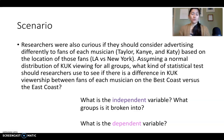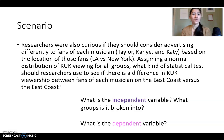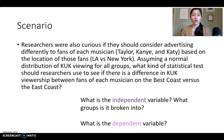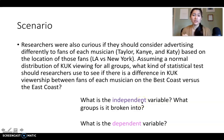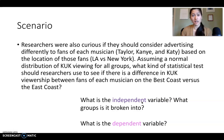So in this scenario, it says researchers were curious if they should consider advertising directly to fans of each musician — Taylor, Kanye, and Katie — based on the location of those fans, LA versus New York, assuming a normal distribution of 'Keeping Up with the Kardashians' viewing for all groups. What kind of statistical test should researchers use to see if there's a difference in viewership between fans of each musician on the West versus East coasts? When reading these scenarios, I recommend breaking it down: identify what the independent variable is, or are there multiple independent variables, and what the dependent variable is. Approaching it that way will help you identify which type of statistical test is most appropriate.